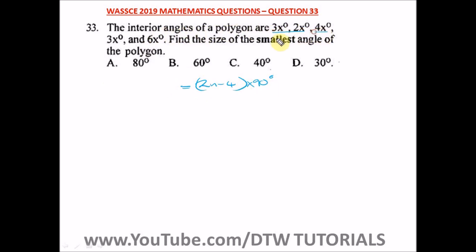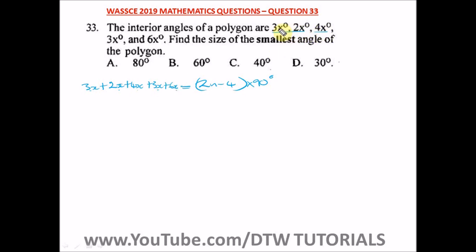We add up all the given angles: 3x + 2x + 4x + 3x + 6x. We count 1, 2, 3, 4, 5 — so this is a pentagon. Since there are five angles, the polygon has five sides, meaning n equals 5.